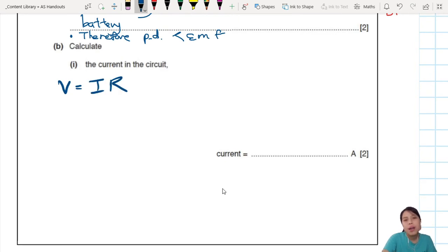So V here is the potential across the resistor, so that's given as 6.9 volts. Current we don't know, we're trying to find. R is 5 ohms. Then you divide, I is 6.9 divided by 5, 1.38 amps.